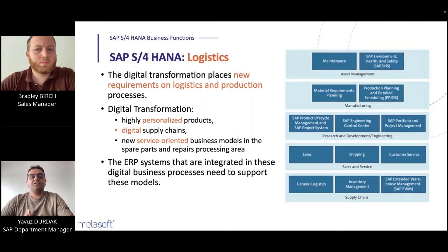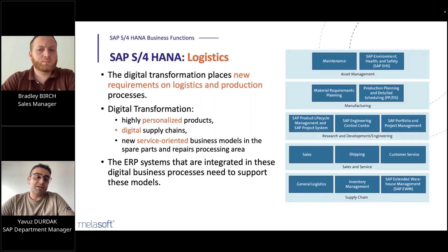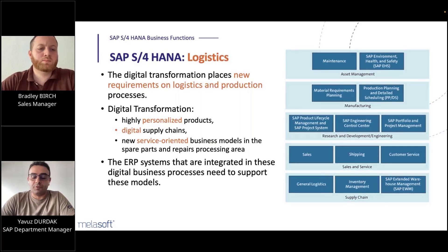On the logistics side, digital transformation has introduced new requirements in logistics and production processes. Products are now highly customized and personalized as required by the market. Supply chains are becoming more digitalized, and new service-oriented business models exist in spare part and repair processing areas. ERP systems must manage these new developments, and switching to SAP S4 HANA addresses these requirements.